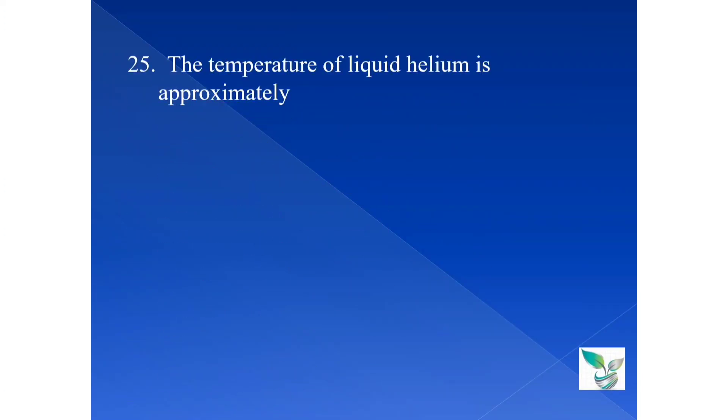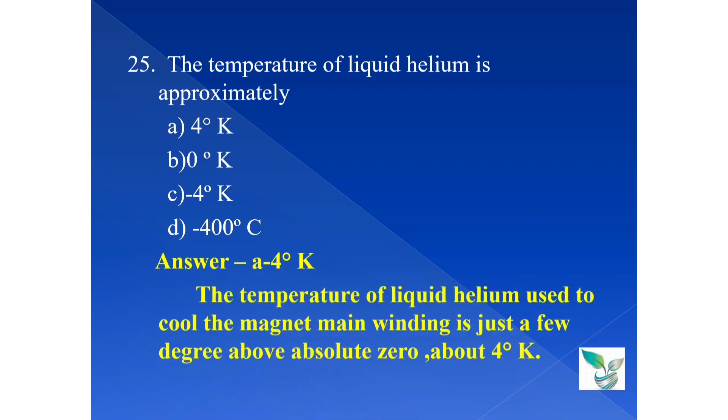Moving on to the next question, question number 25. The temperature of liquid helium is approximately, option A, 4 degree Kelvin, option B, 0 degree Kelvin, option C, negative 4 degree Kelvin, and option D, negative 400 degree Celsius. The answer is option A, 4 degree Kelvin. So, let's see the explanation. The temperature of liquid helium used to cool the magnet main winding is just a few degrees above absolute zero, that is above 4 degree Kelvin.